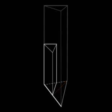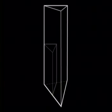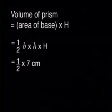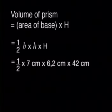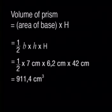Now we are ready to test our predictions. If what we found with rectangular prisms works for other prisms, then we should find that doubling all the dimensions of the triangular prism will make a volume eight times bigger than the original volume. If I double each of the dimensions, I would have to double the base, the perpendicular height, and the height of the box. Volume is area of base times height, so we get half times 7 centimeters times 6.2 centimeters times 42 centimeters, which is 911.4 cubic centimeters.